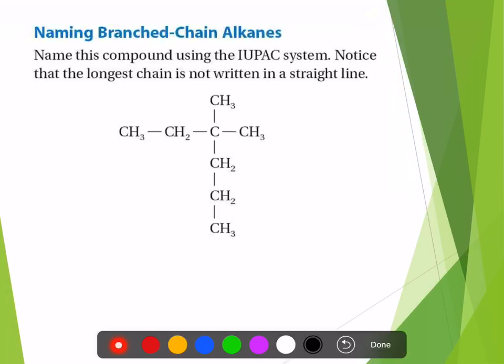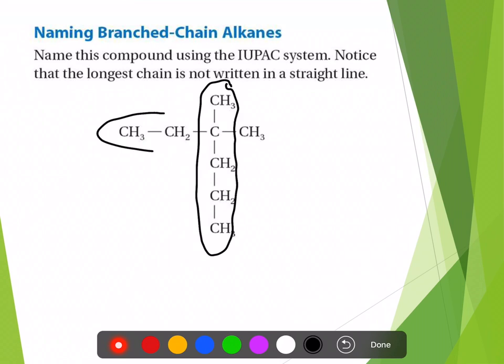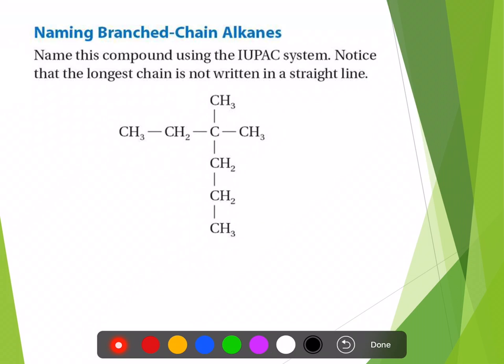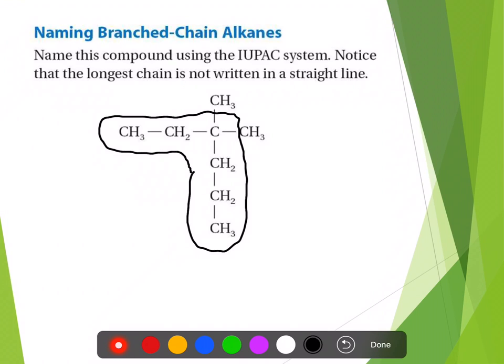The parent chain is the longest continuous chain of carbons. Looking at this, a lot of people jump straight to thinking it's either got to be this or it's got to be this — and neither of those is correct. You have to remember that the longest chain might not be straight. In fact, those six carbons is the longest continuous chain of carbons.